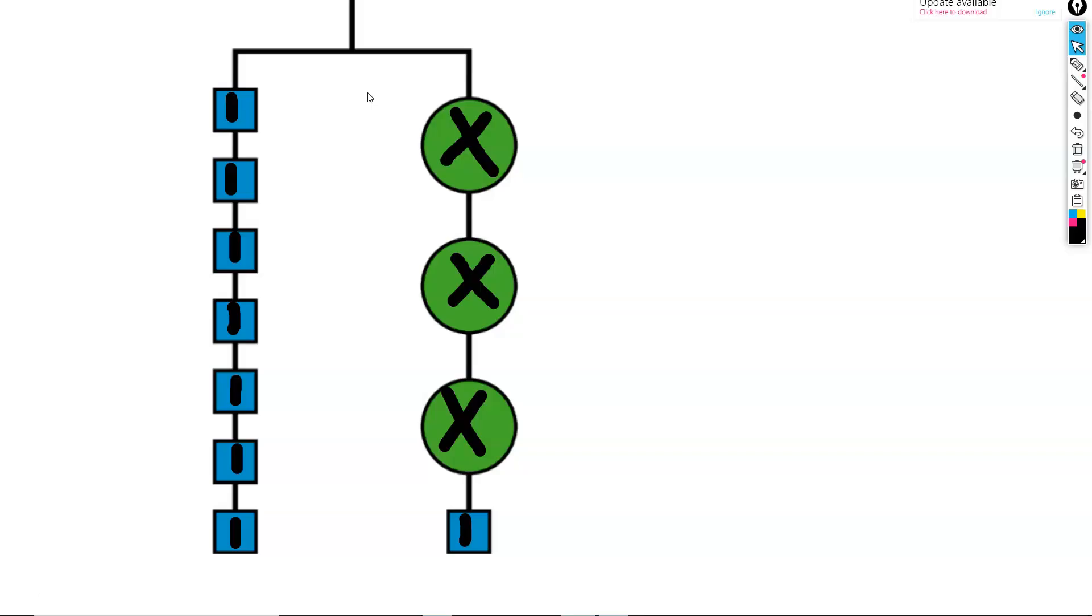This is a hanger diagram. A hanger diagram shows us the relationship between two different weights. Because this hanger diagram is flat, that tells us that both sides weigh the same amount.